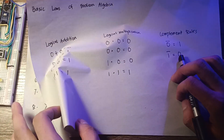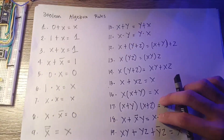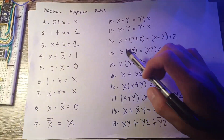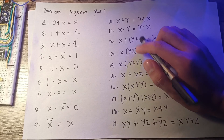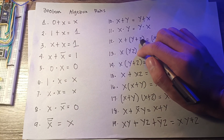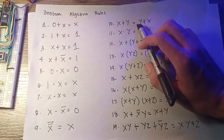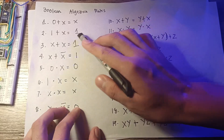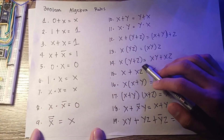We also have more rules about Boolean Algebra which can be proved by perfect induction. These are 19 rules that I know of.